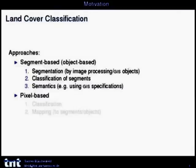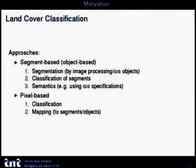On the other hand, you have the pixel-based approach, where you do a direct classification and have results for all pixels. But if you want a relation to segments or objects — for example to verify or update regions — you also need a mapping, and again you have the problem of needing some semantics.